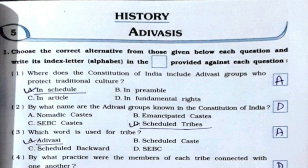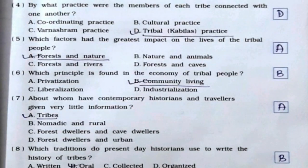First one: Where does the Constitution of India include Adivasi groups who protect traditional culture? It's option number A, in Schedule. Second one: By what name are the Adivasi groups known in the Constitution of India? It's option number D, Scheduled Tribes. Third: Which word is used for tribe? It's option number A, Adivasis.